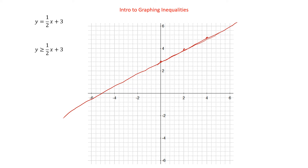What would an inequality be different? So y is greater than or equal to one-half x plus 3 — that line is going to go in exactly the same place. But now we need to think about shading one side or the other of it. We want when y is greater than or equal to one-half x plus 3. Some people say: if it's greater, shade above; if it's less, shade below. That can work, but a better idea is to just pick a point. Every point on one side of the line will work; every point on the other side will not. So if we pick the point (0, 0), is 0 greater than 0 plus 3? Is 0 bigger than 3? No — 0 is less than 3. So the origin won't work.